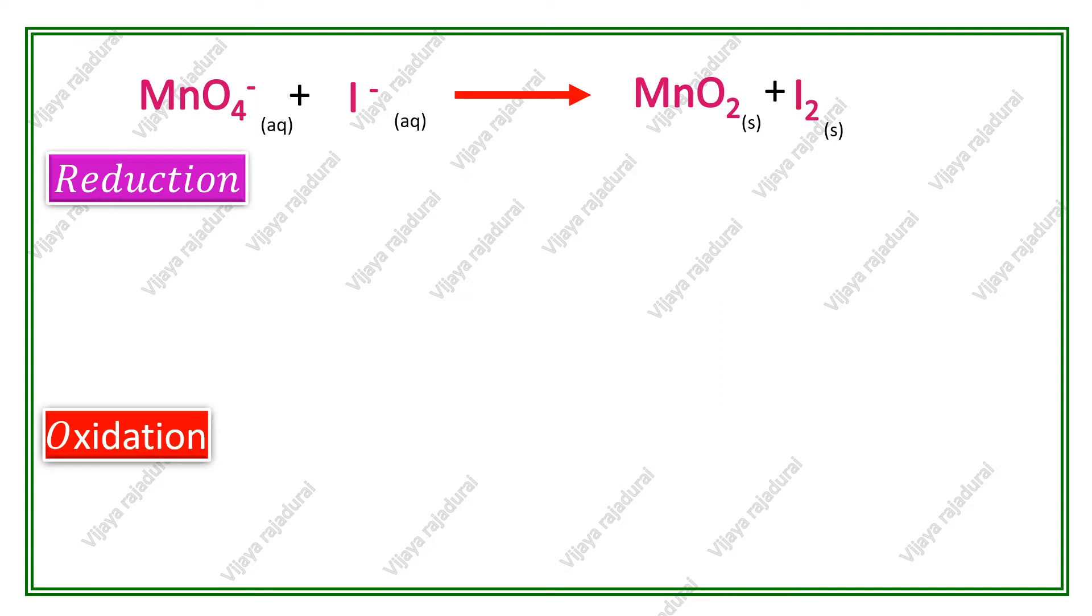In MnO4 minus, manganese oxidation state is plus 7. In MnO2, its oxidation state is plus 4. Oxidation number is reduced from plus 7 to plus 4. So, MnO4 minus to MnO2 is the reduction reaction. Obviously, I minus to I2 is the oxidation reaction.